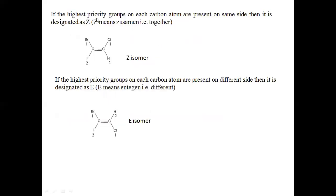Now, if the highest priority groups on each carbon atom are present on the same side of the double bond, then the isomer is designated as Z. Z comes from the German word Zusammen, meaning 'together.' In our example, bromine is the highest priority group on the first carbon and chlorine on the second carbon, and both highest priority groups are on the same side — so this isomer is called the Z isomer.